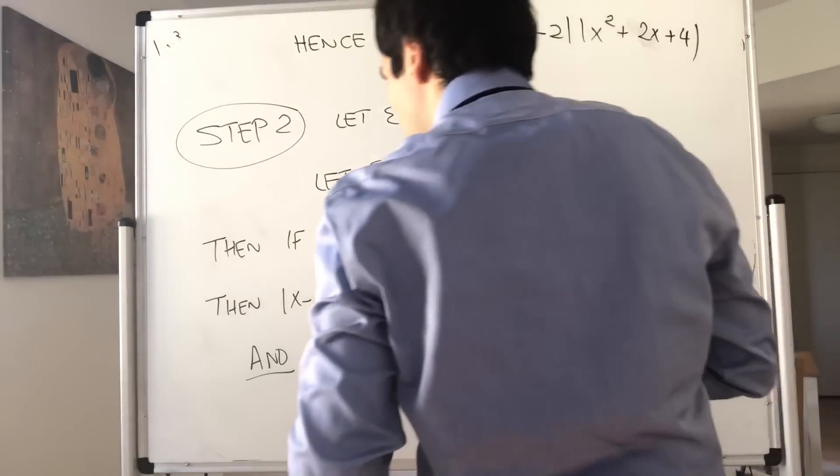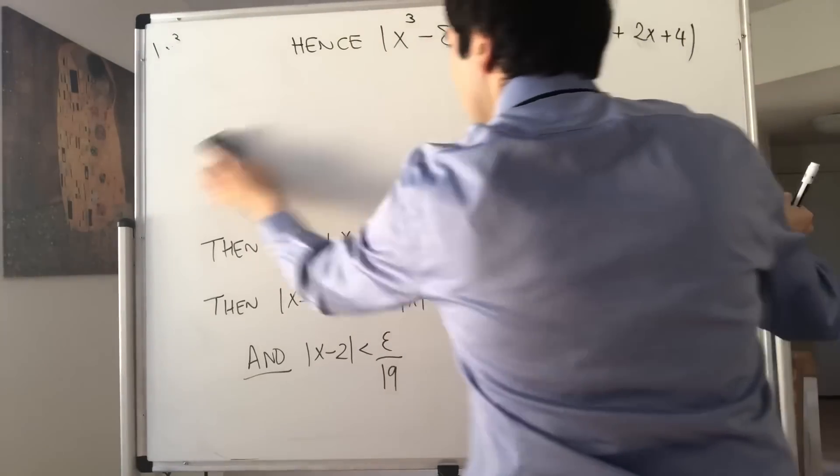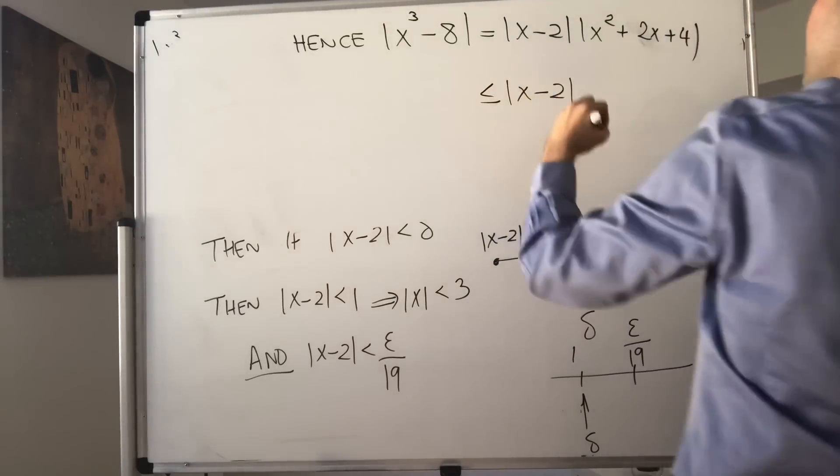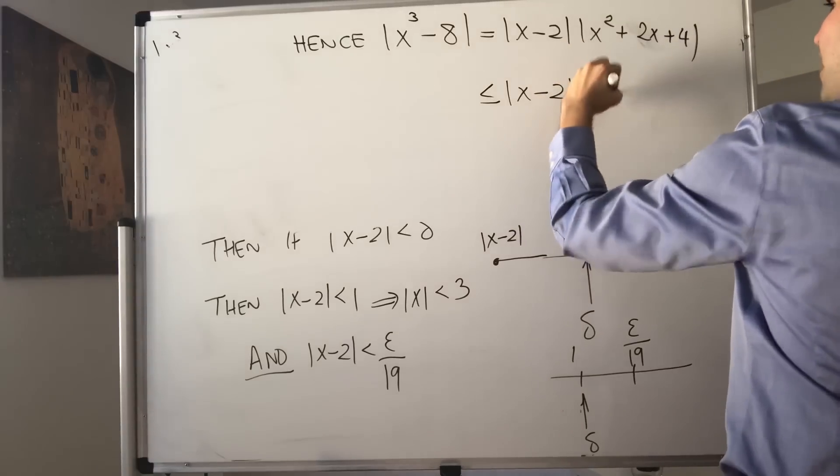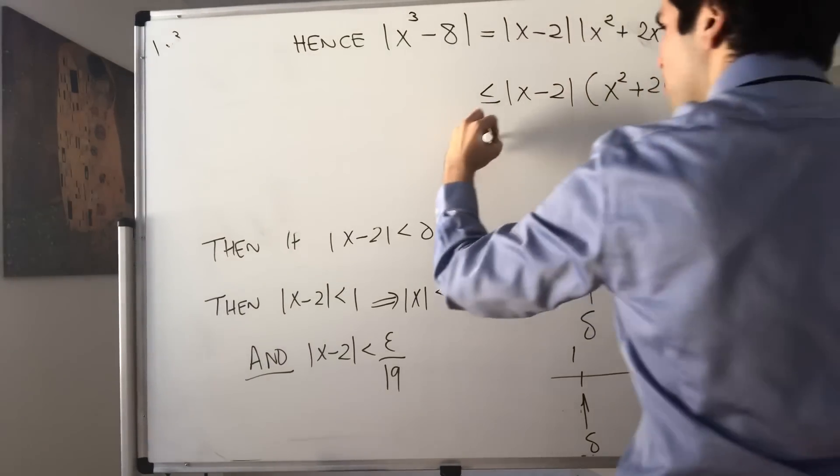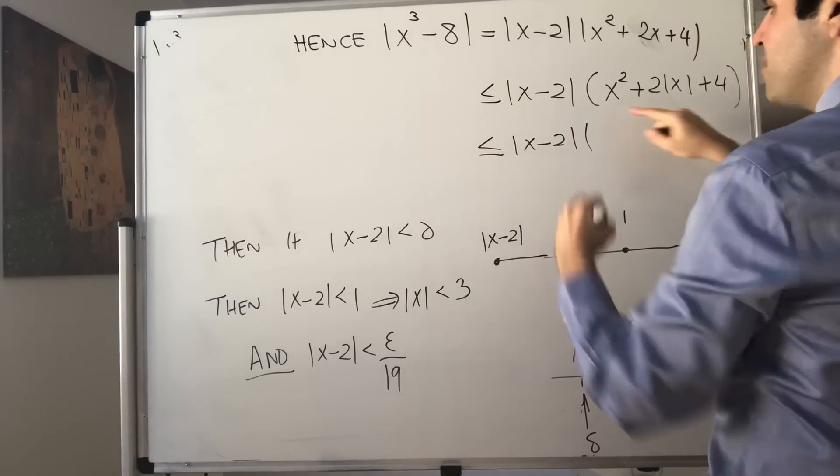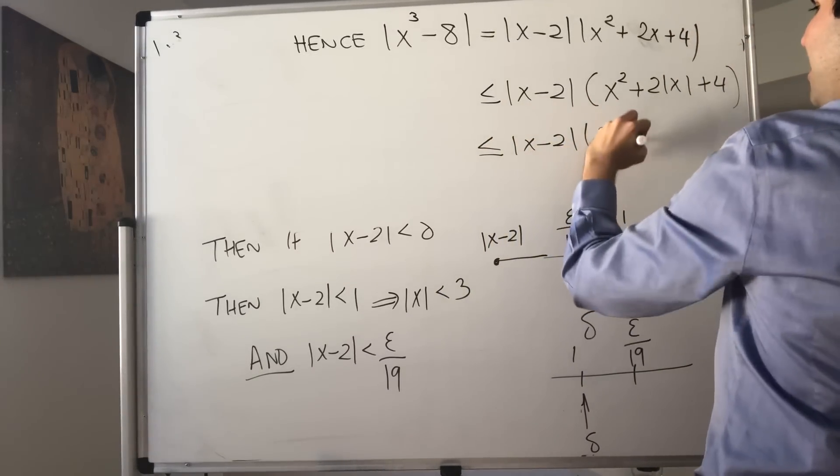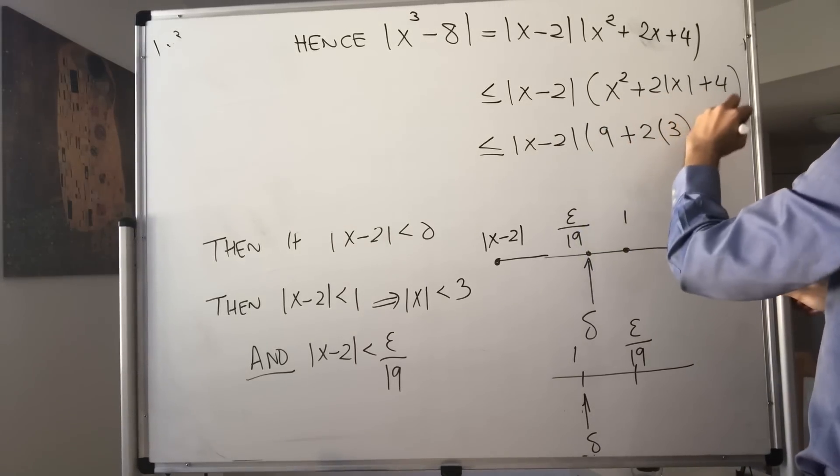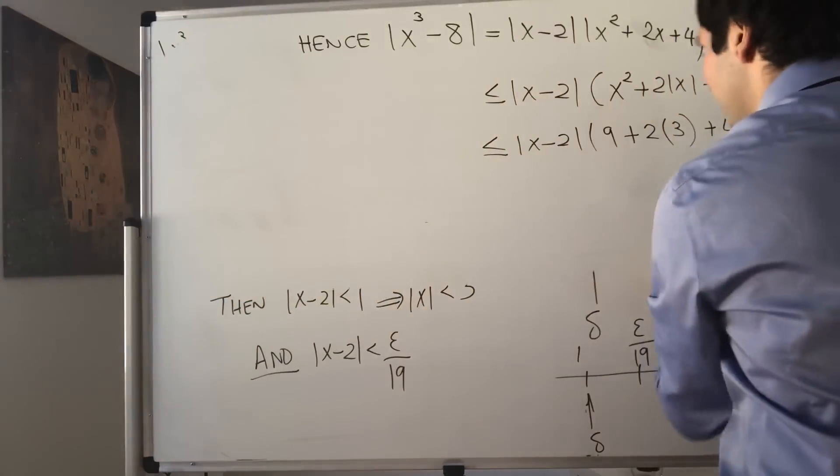This becomes less than or equal to x minus 2 times x squared plus 2 absolute value of x plus 4. But now we know this is less than or equal to x minus 2 times x squared was less than 9, absolute value of x was less than 3, and then plus 4. At the end I believe we get 19.